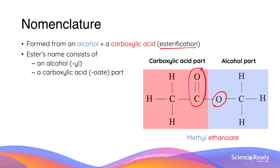The name of the ester can be deduced by counting the number of carbon atoms in each part of the molecule. In this example, there is one carbon atom in the alcohol part and two carbon atoms in the carboxylic acid part. So the name of the ester is methyl, referring to the one carbon atom in the alcohol part, and ethanoate, referring to the two carbon atoms in the carboxylic acid part.